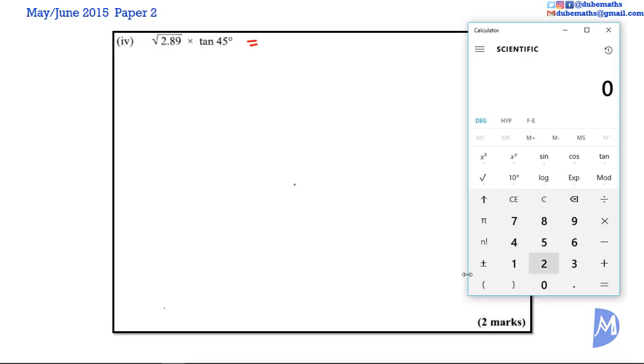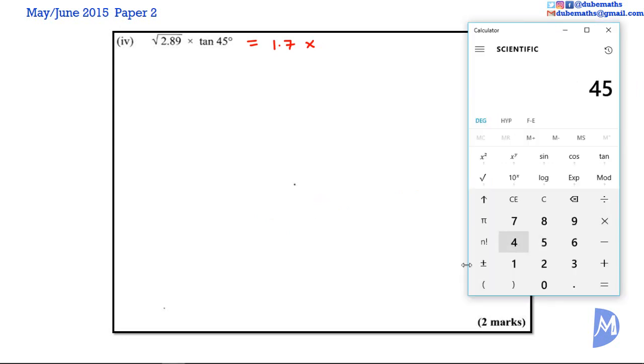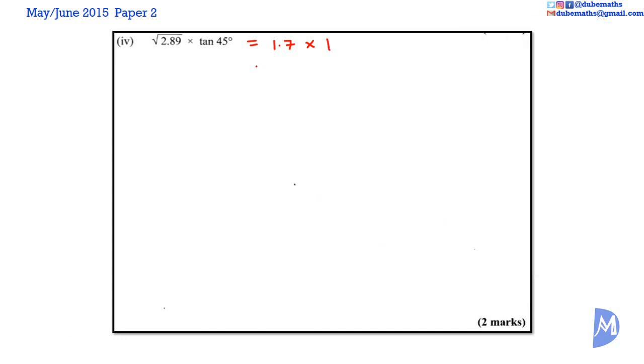Part 4. The square root of 2.89 multiplied by tan 45 degrees. The square root of 2.89 is equal to 1.7. Tan of 45 degrees is equal to 1. And we have 1.7 multiplied by 1 is equal to 1.7, because we know that any number multiplied by 1 is itself.